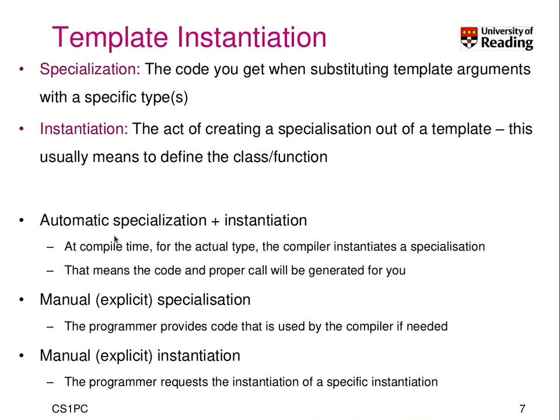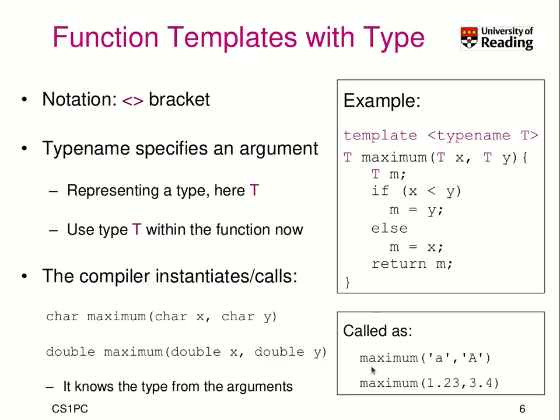There are a couple of options available to the programmer. The most convenient is automatic specialization instantiation: at compile time, the compiler identifies which actual types were passed to a template function and instantiates a specialization based on those types. In our maximum example, when the compiler sees the first argument is a double number, it knows the function should be instantiated for double. The first time the compiler sees the function is needed for a double argument, it specializes and instantiates the code — but only once. You can then use the maximum function as often as you like for different double arguments.